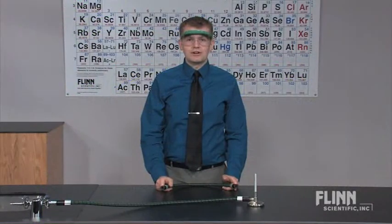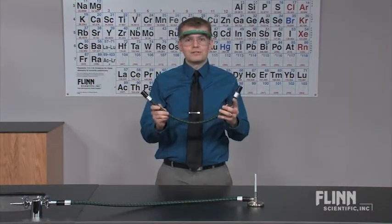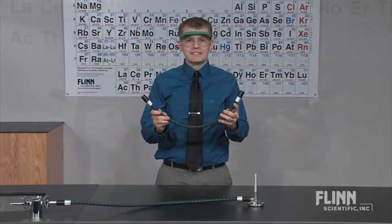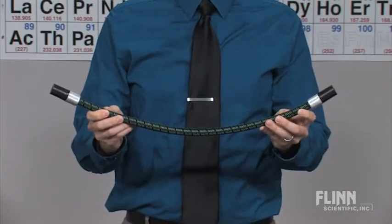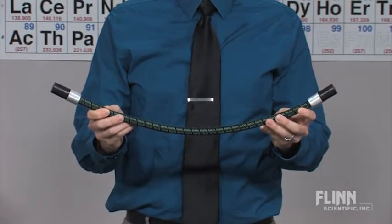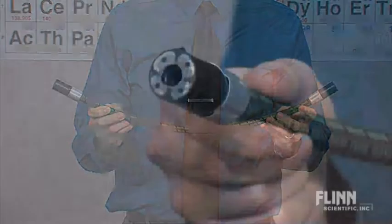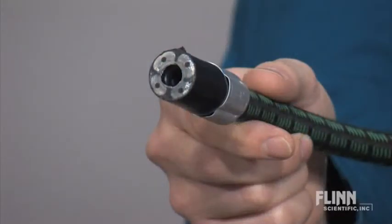Is your burner tubing splitting or cracking? Change it out with burner tubing connectors from Flynn Scientific. This flexible metal tube provides a gas-tight connection between lab burners and a gas source. The metal tube is galvanized and rust resistant.